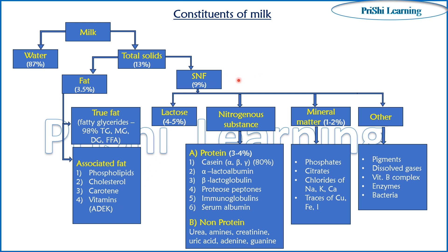The SNF or non-fat part is divided into four components. First, lactose at 4 to 5% of milk. Second, nitrogenous substances divided into protein (3 to 4%) and non-protein nitrogen. Protein includes casein (80%) — specifically alpha-casein, beta-casein, and gamma-casein — as well as alpha-lactalbumin, beta-lactoglobulin, proteoses, peptones, immunoglobulins, and serum albumin.